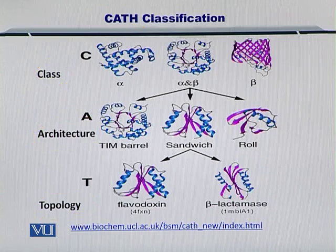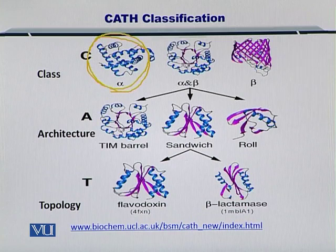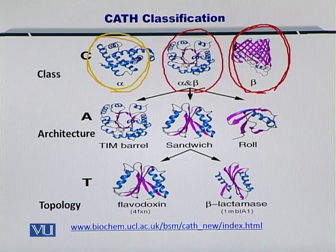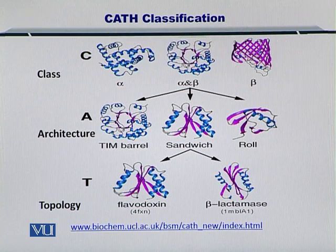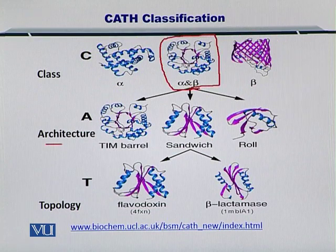If you want to classify proteins based on their class, you can look at the domains that exist within that protein. There can be alpha domains, beta domains, alpha and beta, alpha plus beta, alpha over beta, and so on. In this example, I am going to show you how alpha and beta can be classified into an architecture.